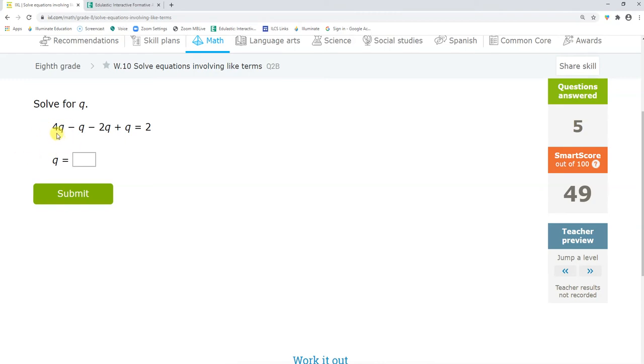Okay, once again, I'm going to add up all the positives. I have 4 queens plus 1 queen. That gives me 5 queens. Minus I have negative 1 queen minus 2 queens. That's negative 3 queens equals 2. So, 2 queens equals 2. Dividing both sides by 2, queens equals 1.